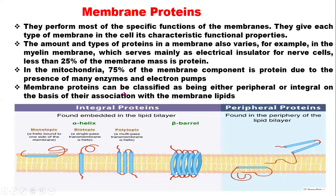Now let's look at membrane proteins. Membrane proteins perform most of the specific functions of the membrane and give each type of membrane its characteristic functional properties. The amounts and types of proteins in a membrane vary. For example, in the myelin membrane, which serves mainly as an electrical insulator for nerve fibers, less than 25% of the membrane mass is protein — the lipid component is predominant, carrying out the insulation function.